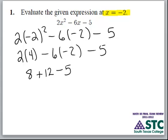Now we perform addition and subtraction in the order that it appears from left to right. 8 plus 12 is 20 minus 5, and 20 minus 5 is 15.